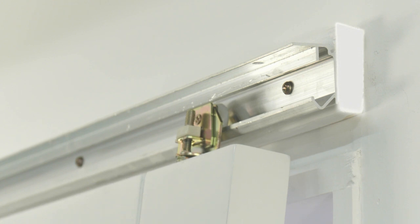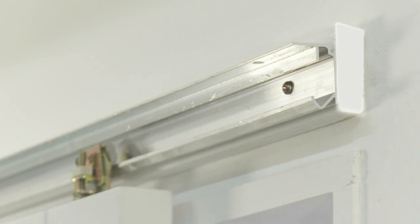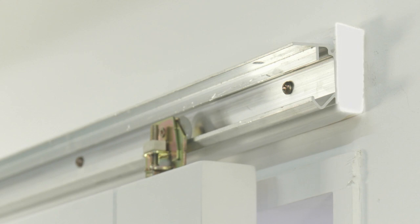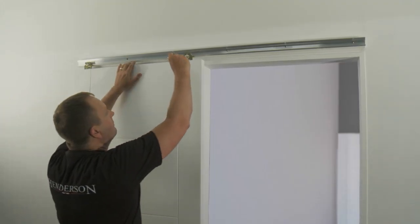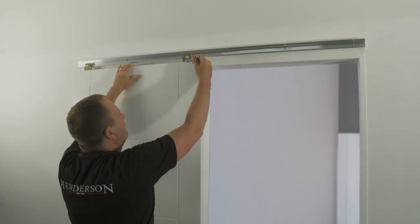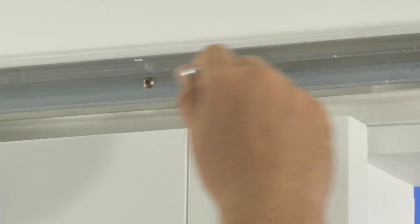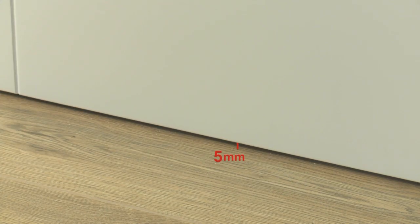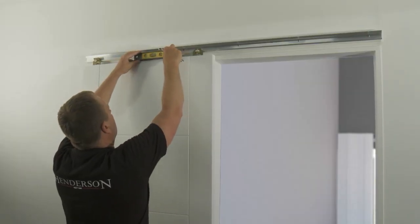Test that the door is running correctly and smoothly by sliding the door up and down the track. Using the adjustment screw built into the hangers, adjust the height of the door so there is the correct clearance gap under the door and level off the door if required. Use a spirit level to check this.